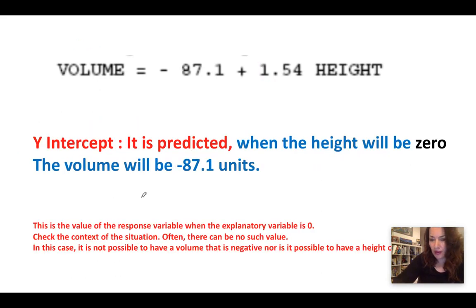How do we interpret y-intercept? We know from algebra that the y-intercept is when x is 0. So you don't want to just say the y-intercept is when x is 0. You want to, in context, say what x means. x, in this case, is our explanatory variable, which happens to be our height. So we can say when the height will be 0, it is predicted the volume will be—what will we be left with? If this is 0, then all this will basically cancel. We'll be left just with the y-intercept here, negative 87.1. So it is predicted when the height will be 0, the volume will be negative 87.1 units.